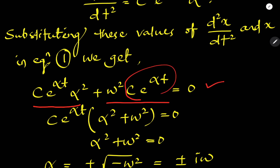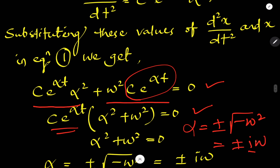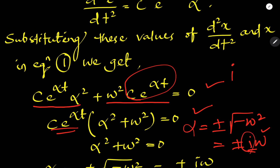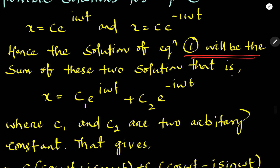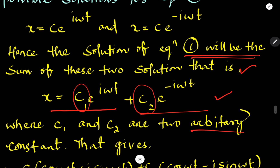Substituting, we get c e to the power alpha t times (alpha squared plus omega squared) equals zero, which gives alpha equals plus or minus the square root of minus omega squared, that is alpha equals plus or minus i omega. Therefore, the general solution is x equal to c1 e to the power i omega t plus c2 e to the power minus i omega t, where c1 and c2 are two arbitrary constants.